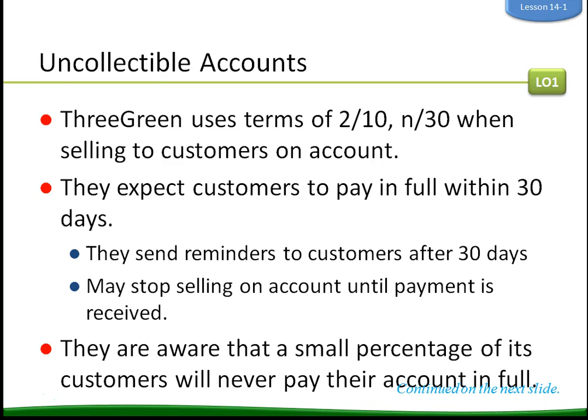3Green uses the terms of 2-10 — remember, if you pay in 10 days you can take 2% off — or net 30 when selling to customers on account. They expect customers to pay in full within 30 days. 3Green begins sending periodic reminders when accounts are more than 30 days past due, and more serious actions may be taken if an account is not paid within 90 days. 3Green may stop selling on account to a customer until payment is received, and they are aware that a small percentage of customers will never pay their account in full.